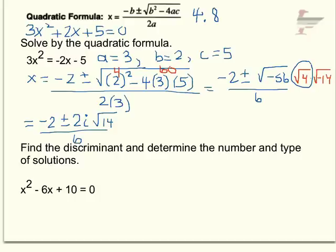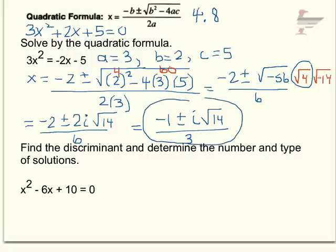And then notice that these reduce to 1 third, and these reduce to 1 third. Remember, it's two separate quantities really divided by 6. So you want to make sure you reduce that. So that's really negative 1 plus or minus i radical 14, all divided by 3. And that's your final answer.